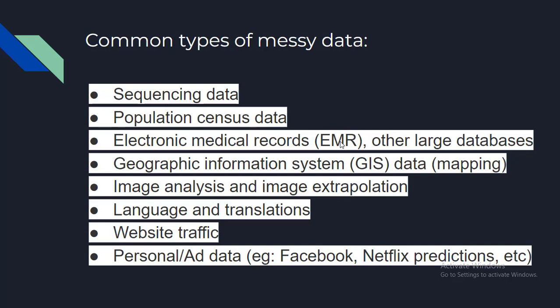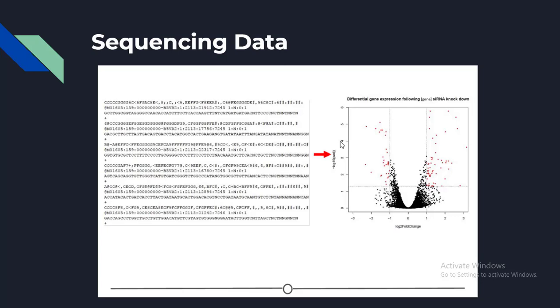Here are some data sources you might encounter, and what makes them common is the messiness of the data — you have to work to extract the information needed to answer your question. These include: sequencing data, population census data, electronic medical records, geographic information systems, image analysis, language and translations, website traffic, and personal or ad data such as Facebook or Netflix predictions.